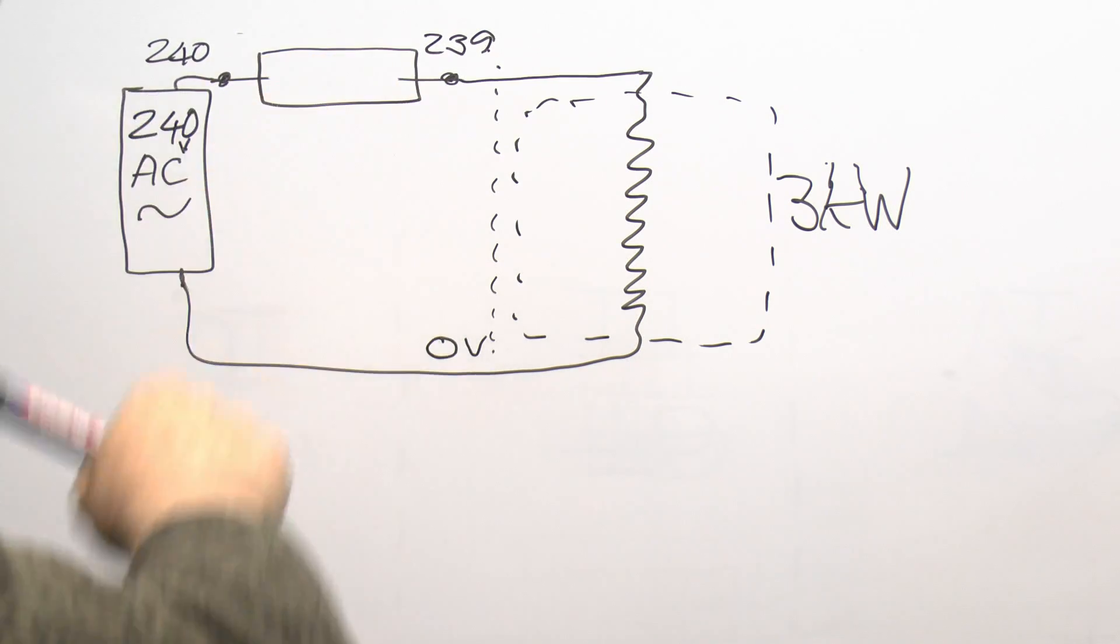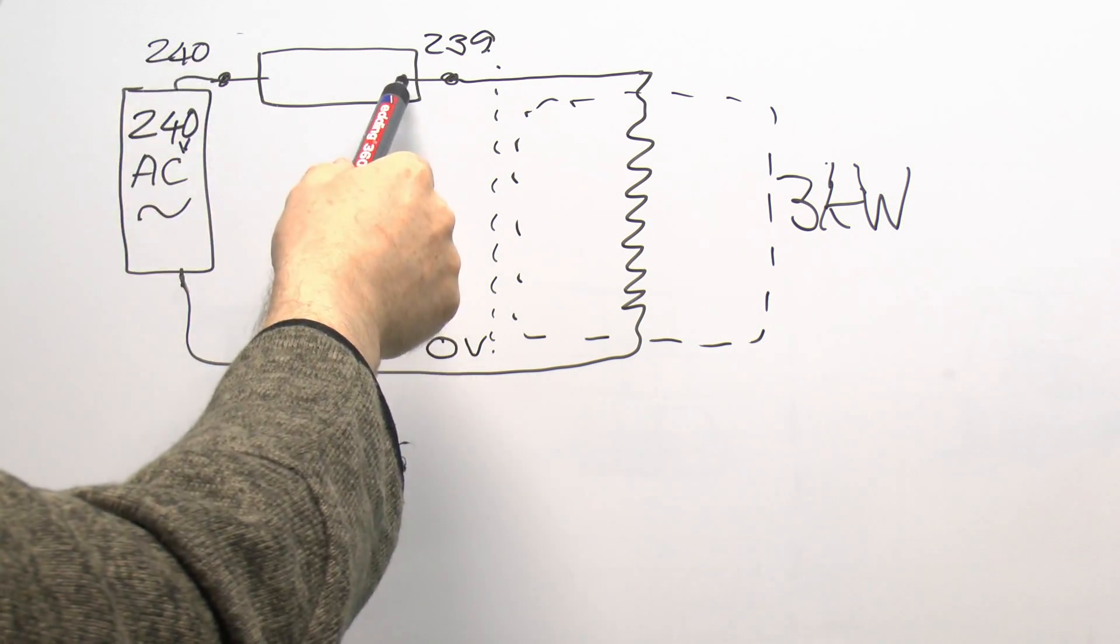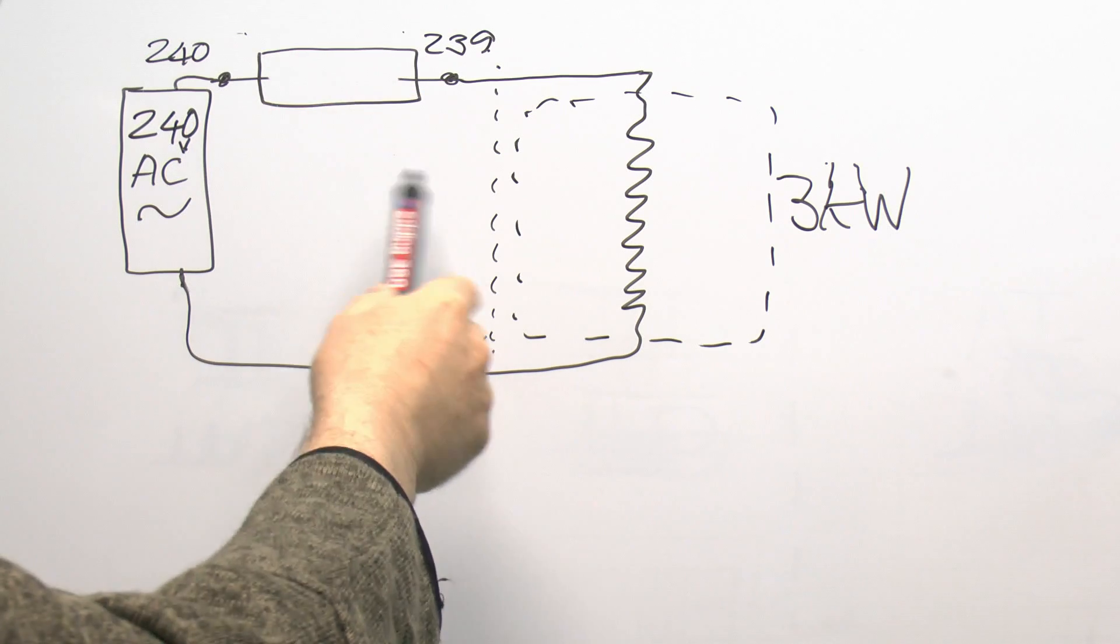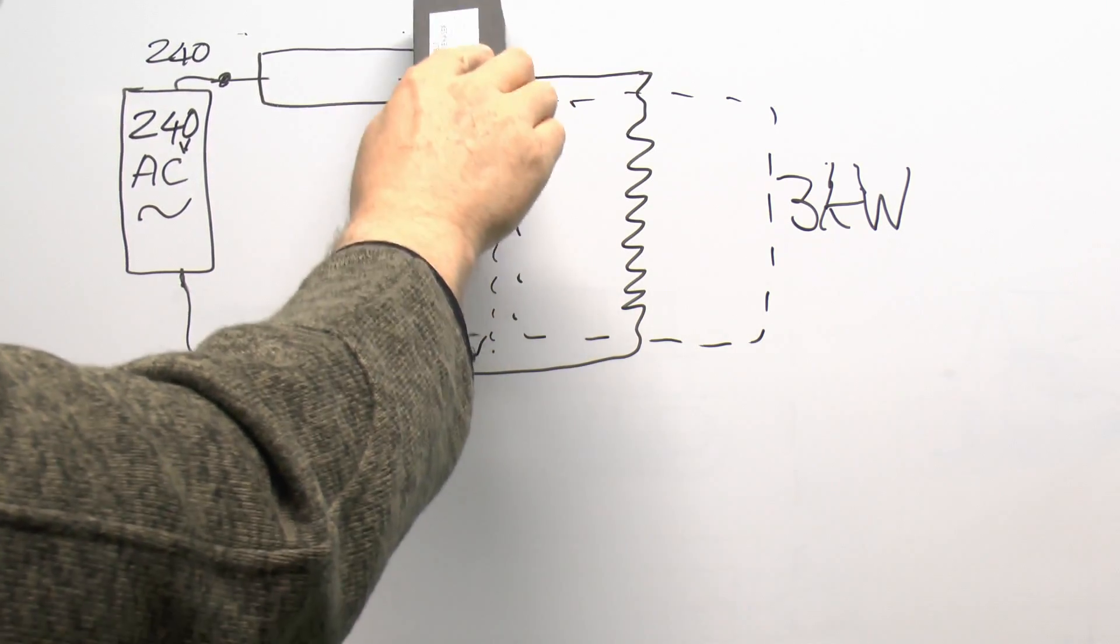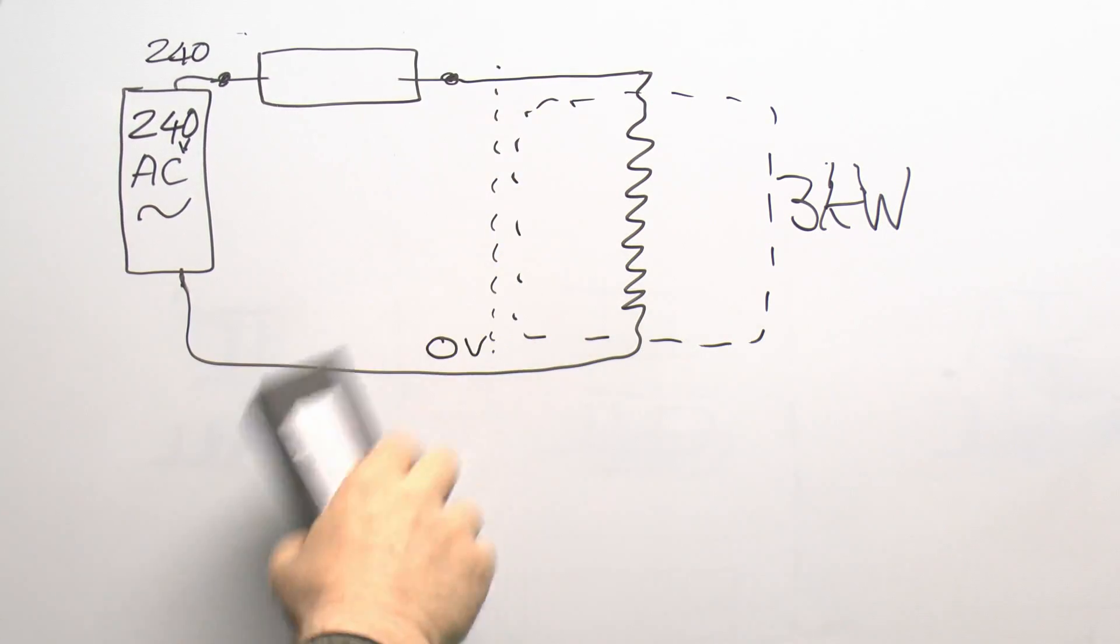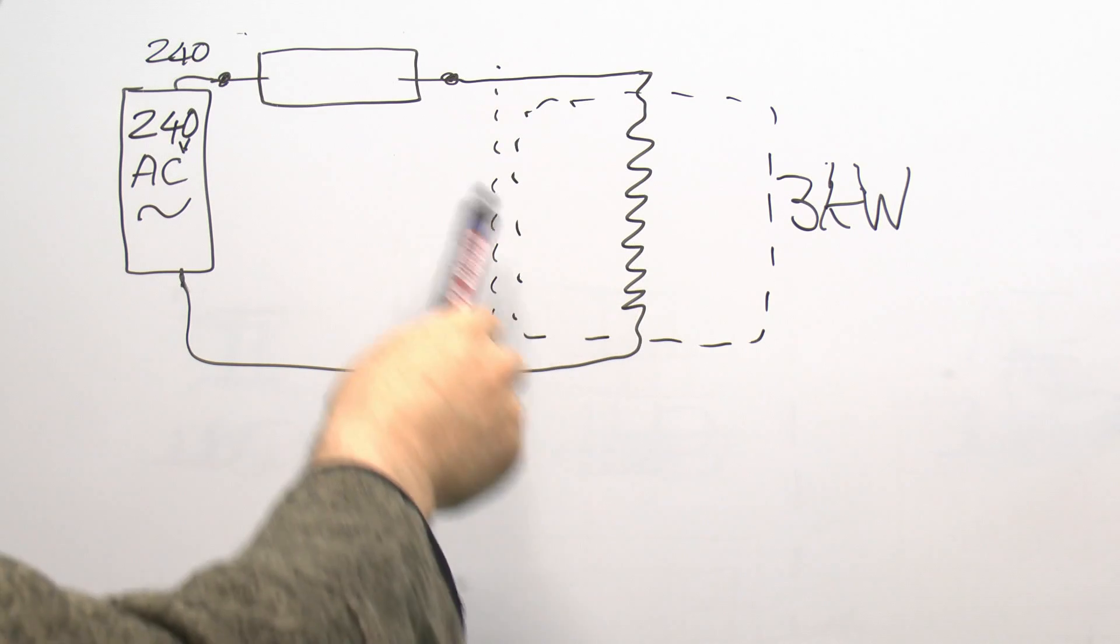Because what will happen is that if this fuse is broken due to it overloading, we're still going to have 240 volts here, but the voltage here now between these two points isn't just going to be one or two volts, it will actually be the full mains voltage. Essentially you've got a break in the circuit here.